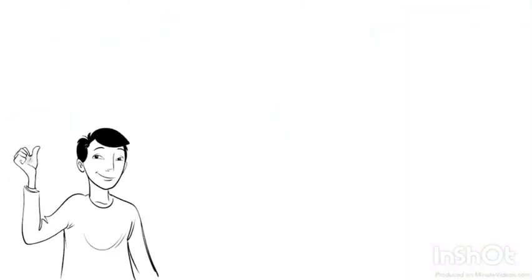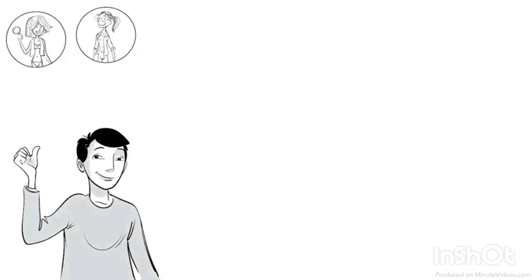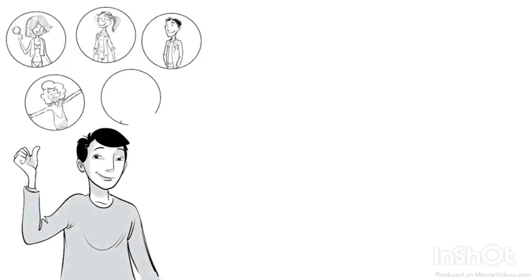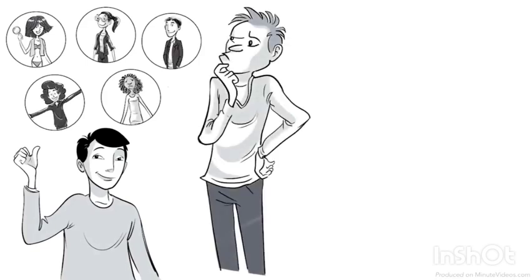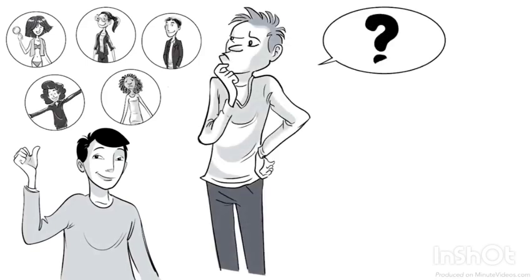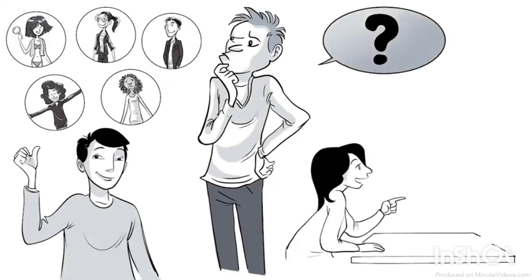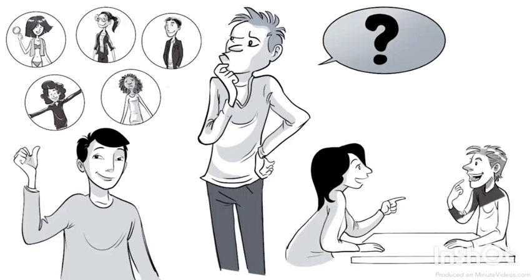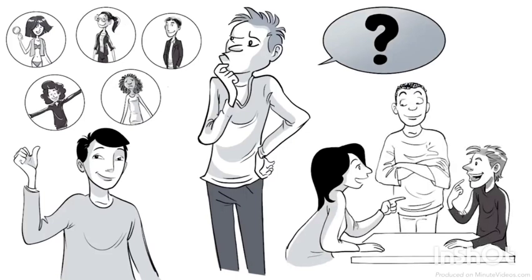What do you think about the Big Five? Do you recognize your own personality in some of the traits? Or do you think this theory is flawed, as we cannot describe an entire personality in five parameters? If you watch this in class and are not sure which traits you have, pick a friend and describe each other. Many of us are bad at describing ourselves, so an outside perspective is often helpful.